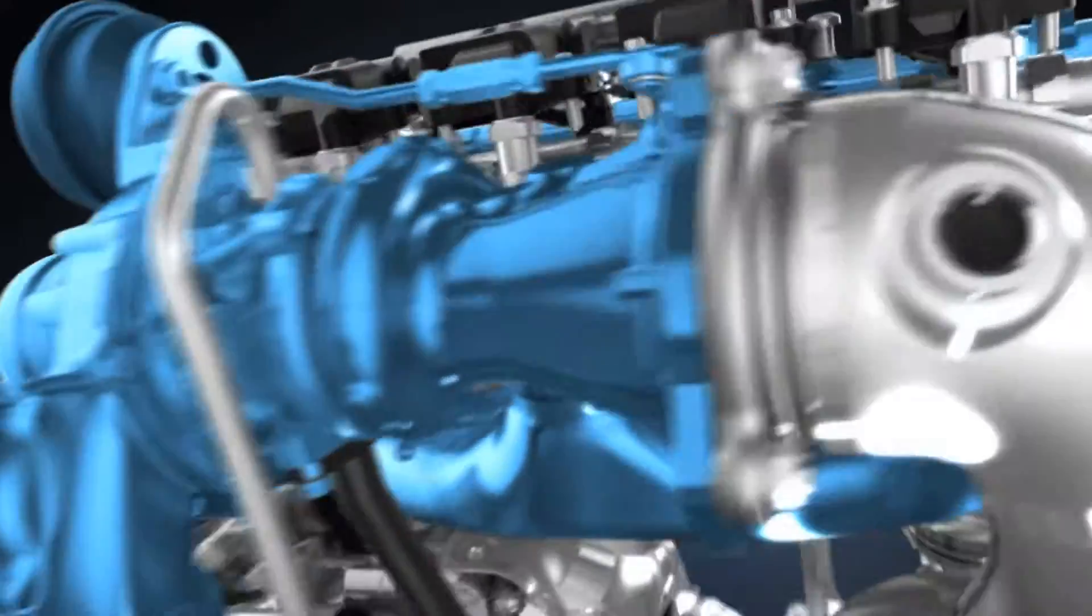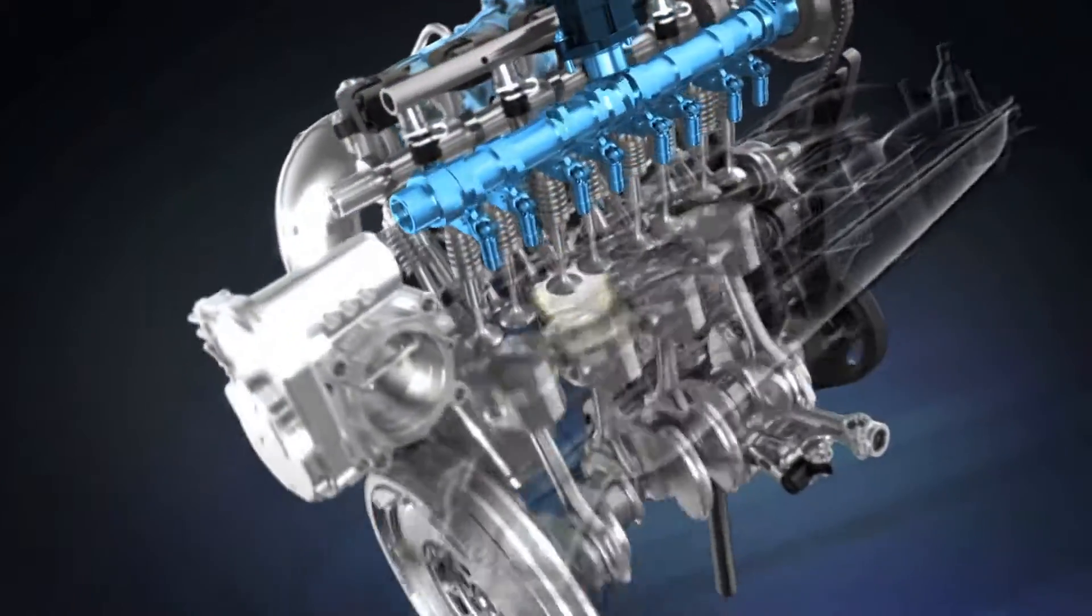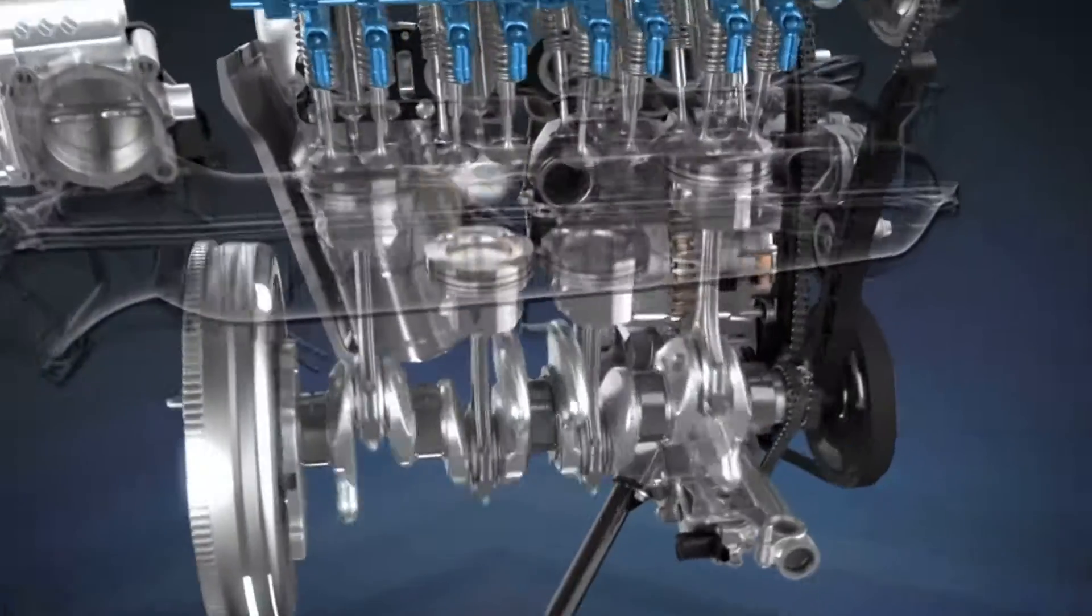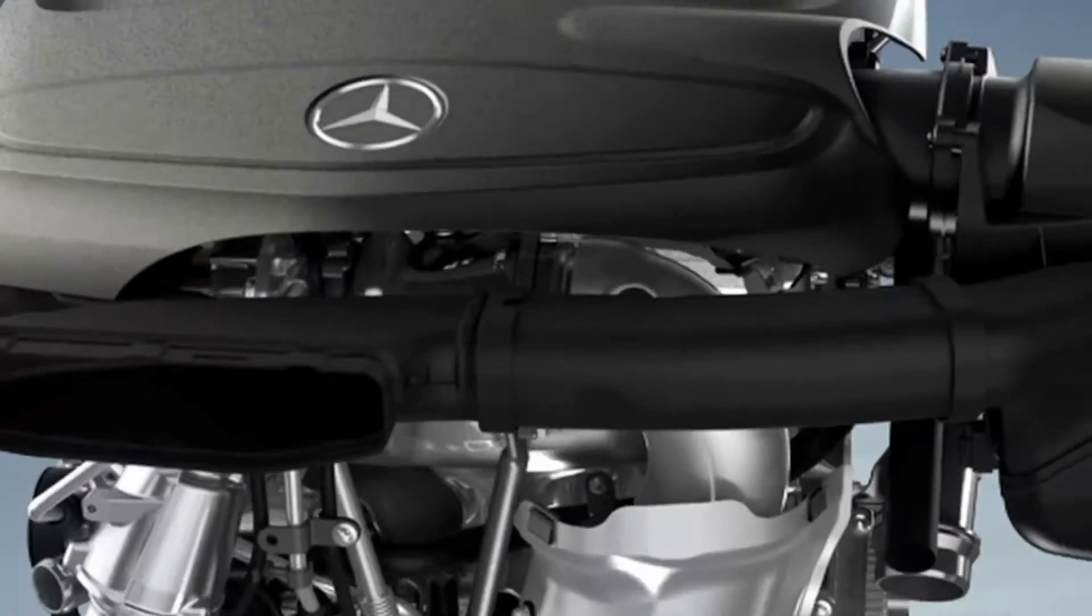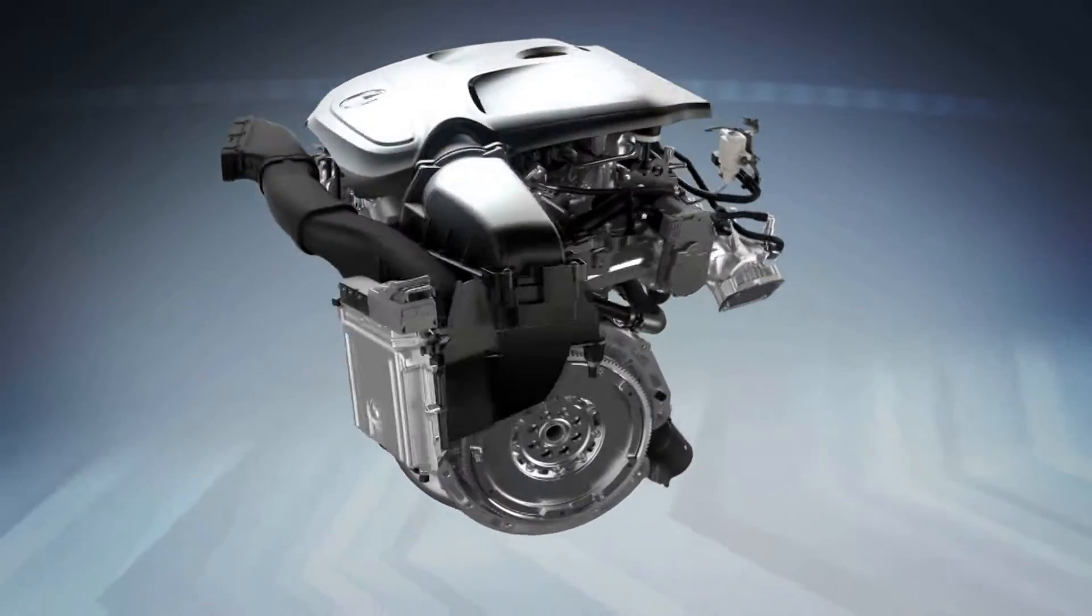With a further increase of the torque, the valve lift is switched to large lift and the load control conventionally takes place via the throttle valve or, in the supercharged operating range, via the degree of supercharging by the turbocharger.